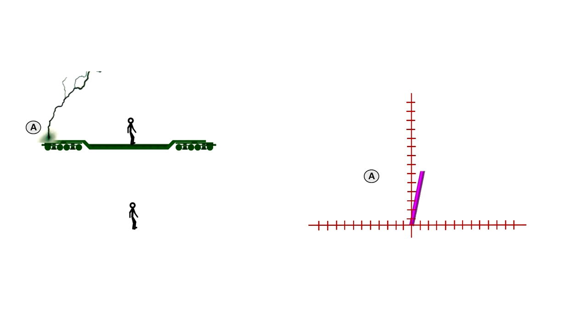In order for the light to reach the person on the train at the same time, the strike behind him will need to hit first from the person on the ground's point of view because it will have to travel further to get to the moving person than the light from the strike that hits in front of him.